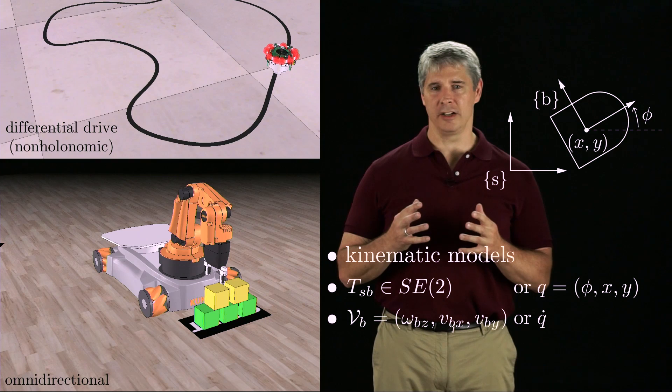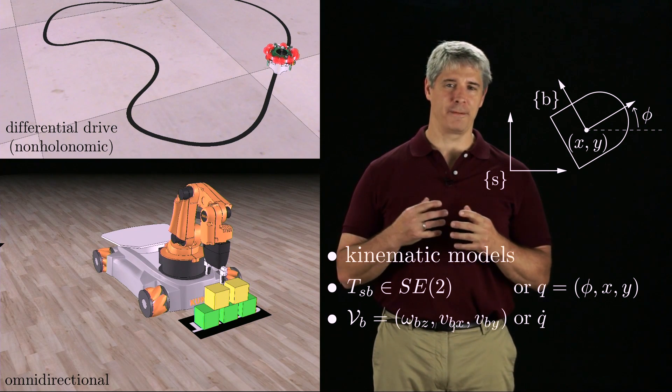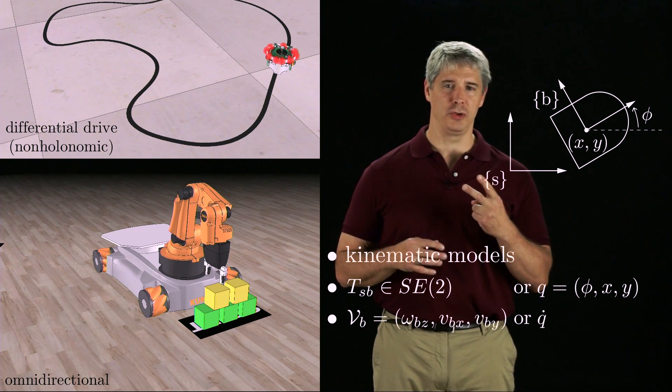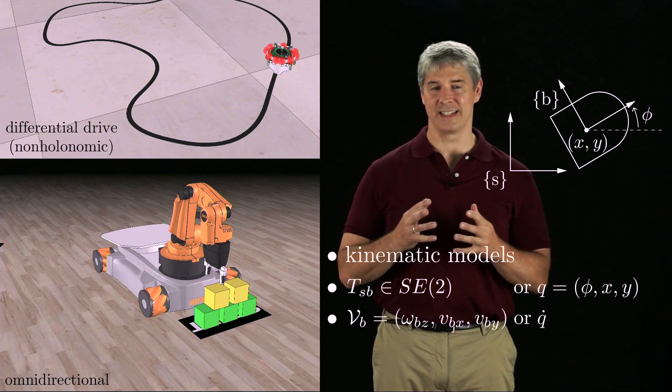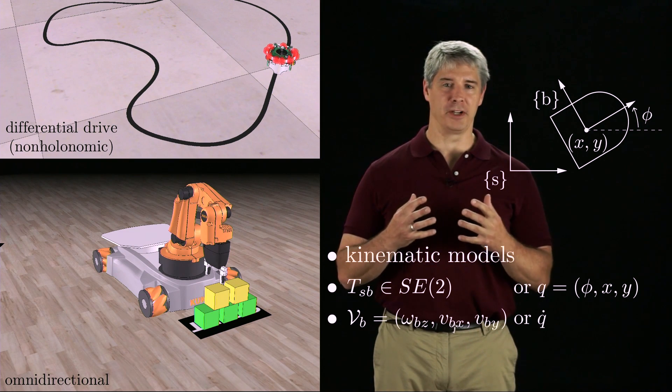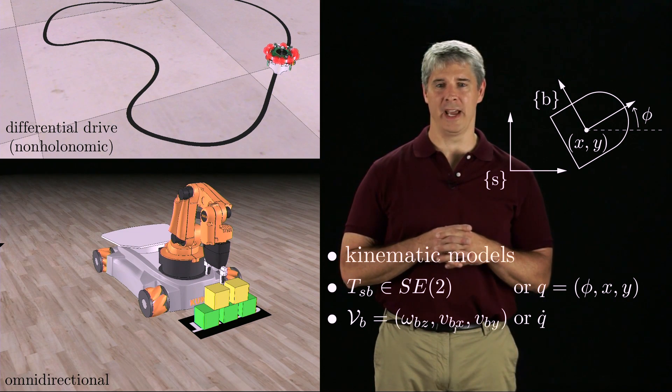For a non-holonomic mobile robot like the differential drive, the space of feasible chassis velocities is only two-dimensional because the robot cannot slide sideways. For an omnidirectional robot, the chassis can move in any direction in its three-dimensional velocity space.